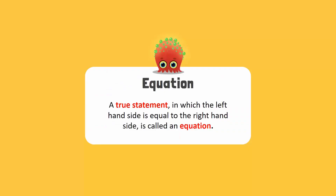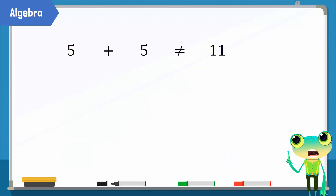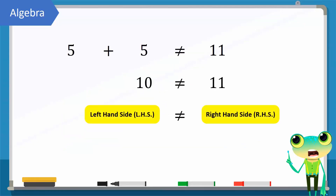A true number statement, with the left-hand side equal to the right-hand side, is called an equation. However, if we replace 6 with any other number, the left-hand side of the equation would not be equal to the right-hand side. Therefore, this statement is false.